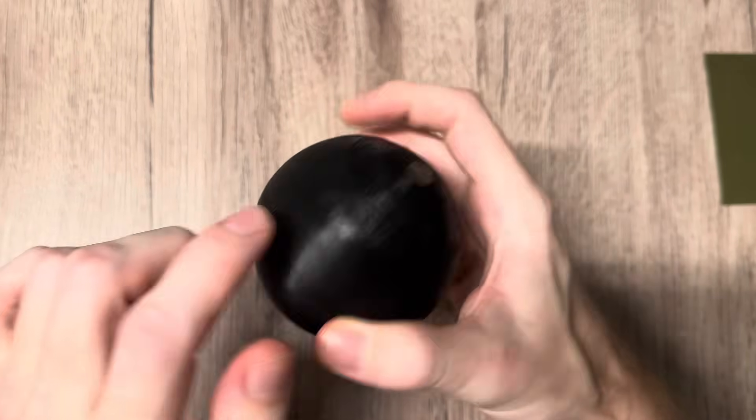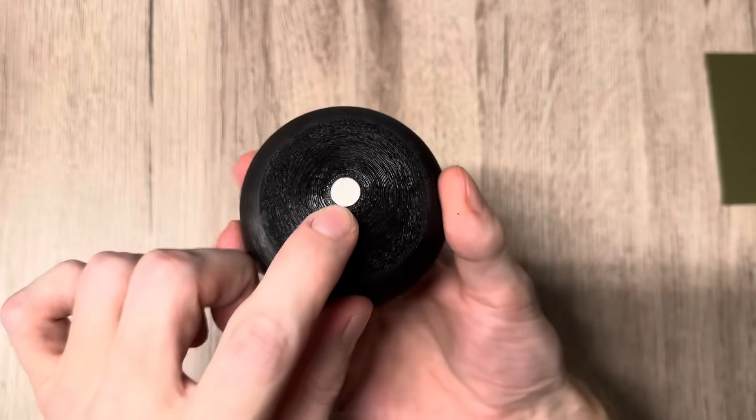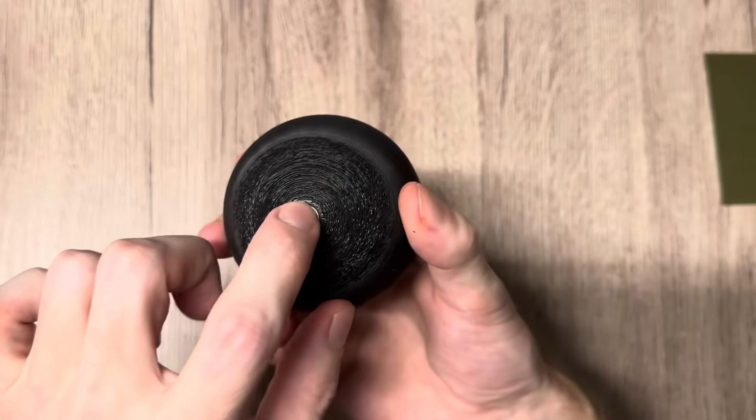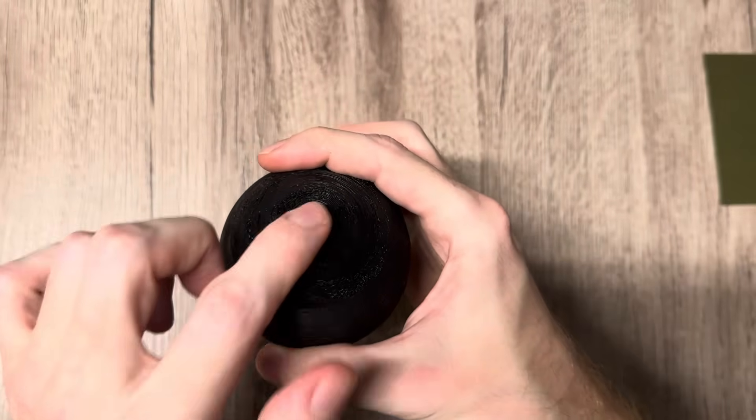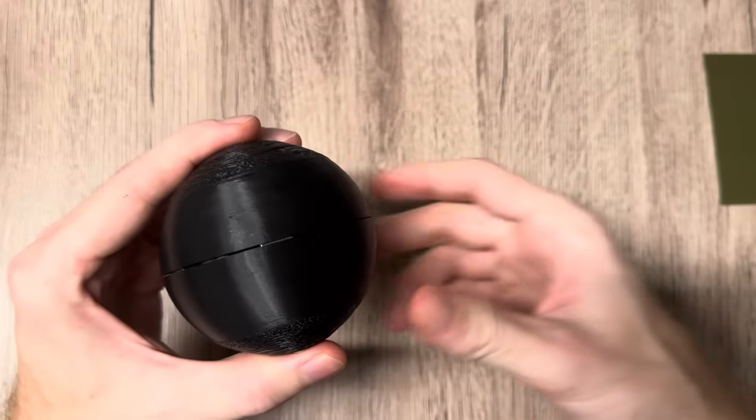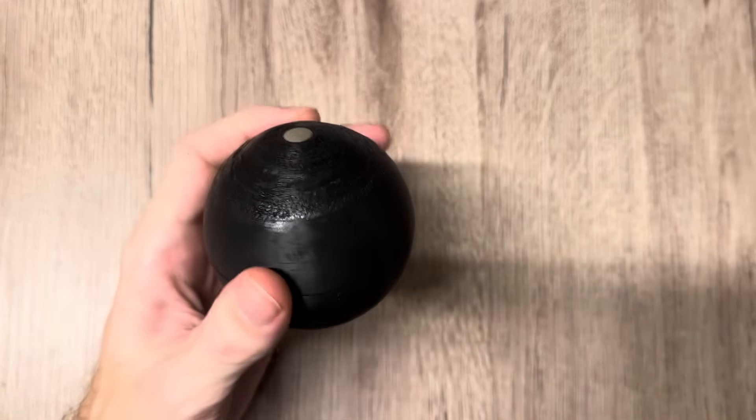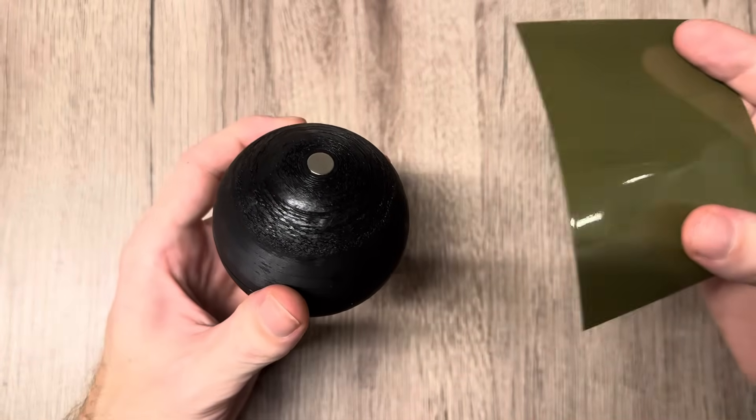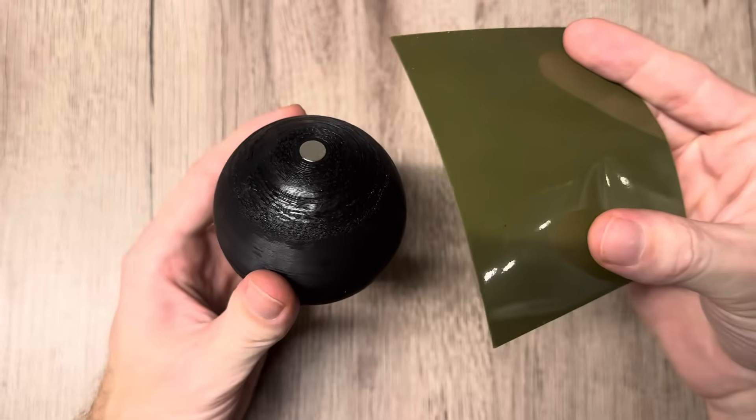Now I added on each of these center holes a ten millimeter disc magnet here and here. One is south pole facing outwards, the other one is north pole facing outwards. As I said before, this alters the entire field of the whole sphere by a lot by just adding two more magnets.